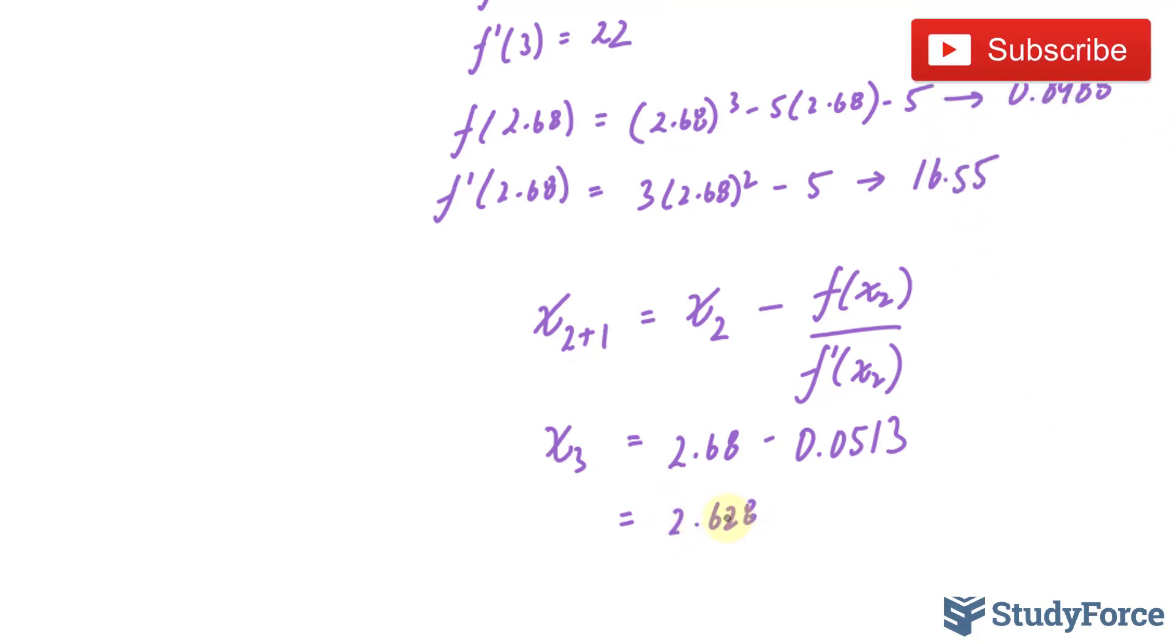Now, since h is 0.0513 and getting smaller, we know that it will have no further effect on the first decimal place, so we stop there. Notice that x subscript 2 and x subscript 3, if we had rounded it to one decimal place, would have still given us 2.6. Therefore, our root to one decimal place is 2.6.